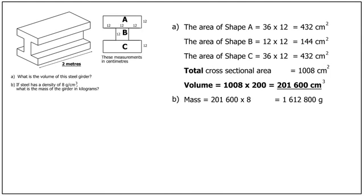The mass is the volume multiplied by the density. If one cubic centimetre has a mass of 8 grams, then 201,600 cubic centimetres must have a mass of 201,600 multiplied by 8 grams. So the mass is 201,600 multiplied by 8, which is 1,612,800 grams. But the question asks for the mass in kilograms. As there are 1,000 grams in a kilogram, we divide by 1,000, giving us 1,612.8 kilograms. That's the answer to Part B.